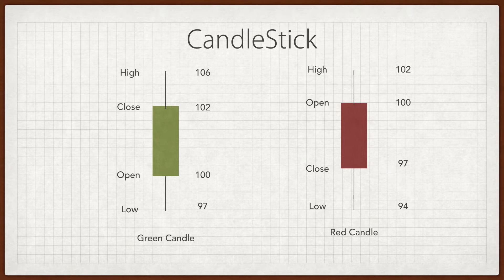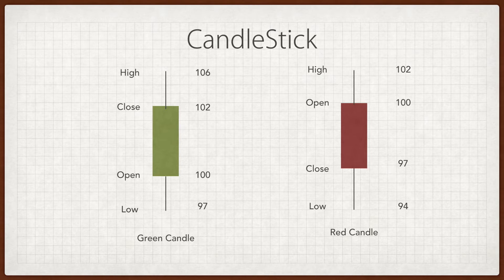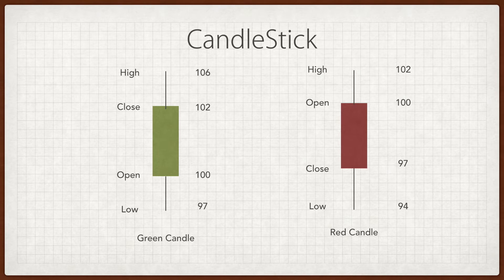Similarly, for a red candle with Ashok Leyland: the stock opened at 100. Investors thought it would move up so they started buying, pushing the stock to 102 — the day's high. Then some bad news came and people started selling, bringing the share down to 94. New investors then came in thinking the stock would recover, and it rose from 94 — the day's low — and closed at 97. That was the day's close.